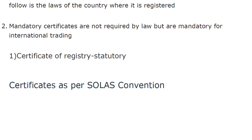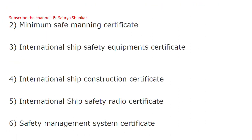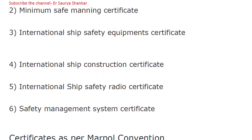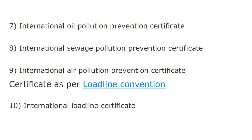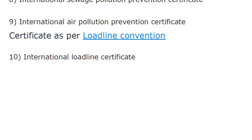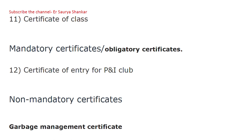Now we will discuss some statutory certificates. First is the Certificate of Registry. Certificates under the SOLAS convention — since 99% of countries have ratified it — include: Minimum Safe Manning Certificate, International Ship Safety Equipment Certificate, International Ship Construction Certificate, International Ship Safety Radio Certificate, and Safety Management System Certificate. Certificates under the MARPOL convention include: International Oil Pollution Prevention Certificate, International Sewage Pollution Prevention Certificate, and International Air Pollution Prevention Certificate. Under the Load Line Convention: the International Load Line Certificate and Certificate of Class.